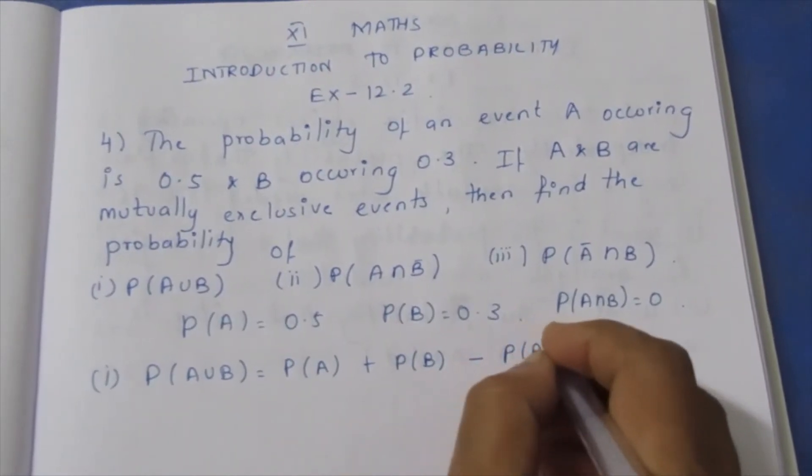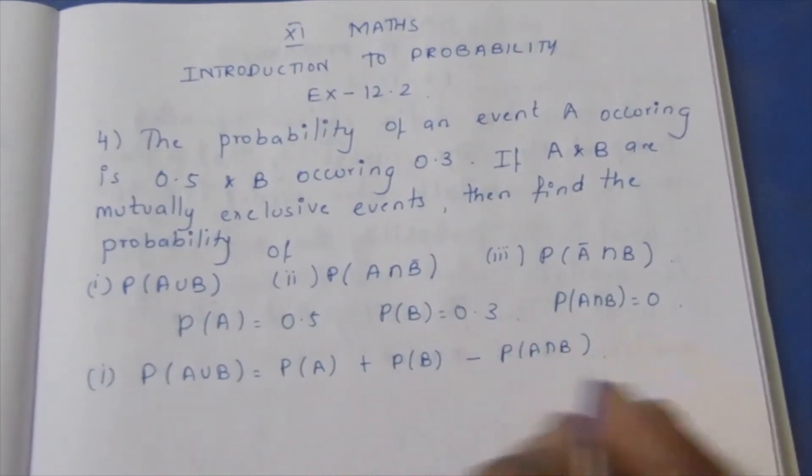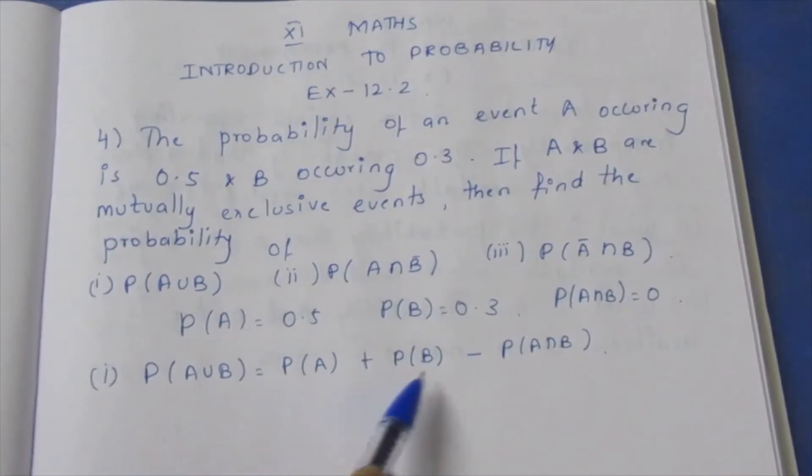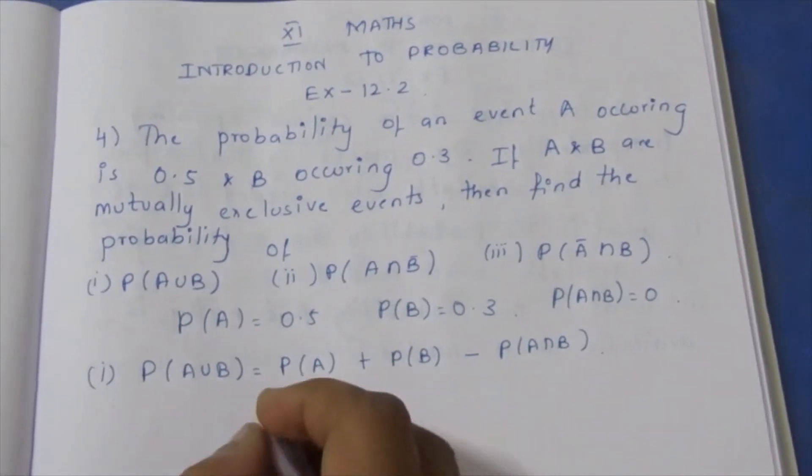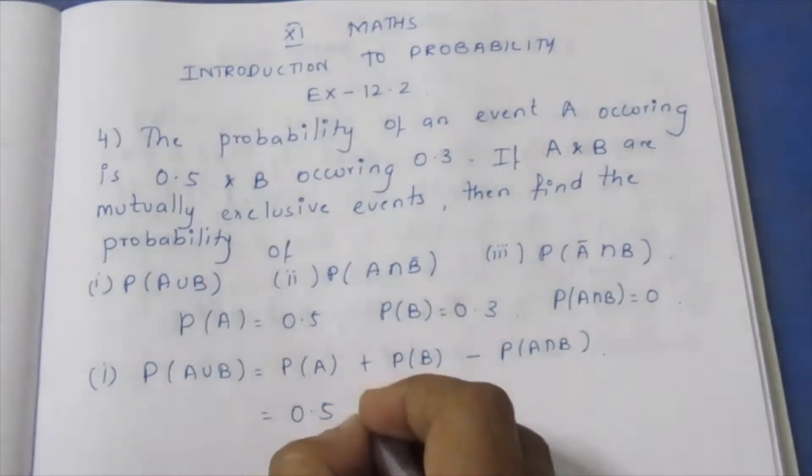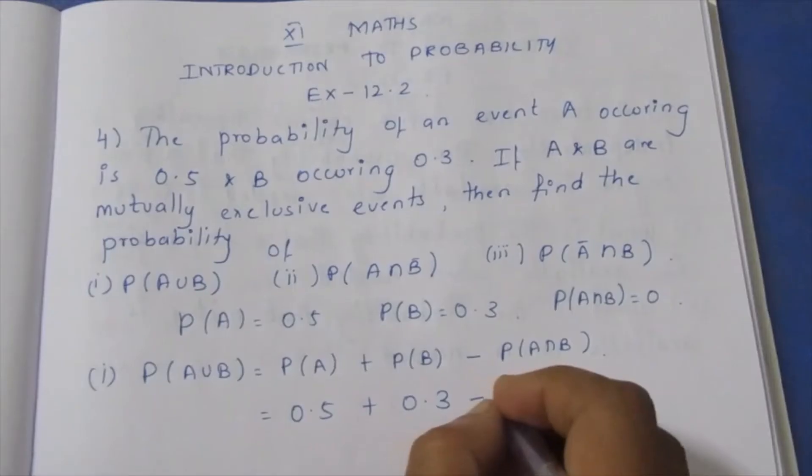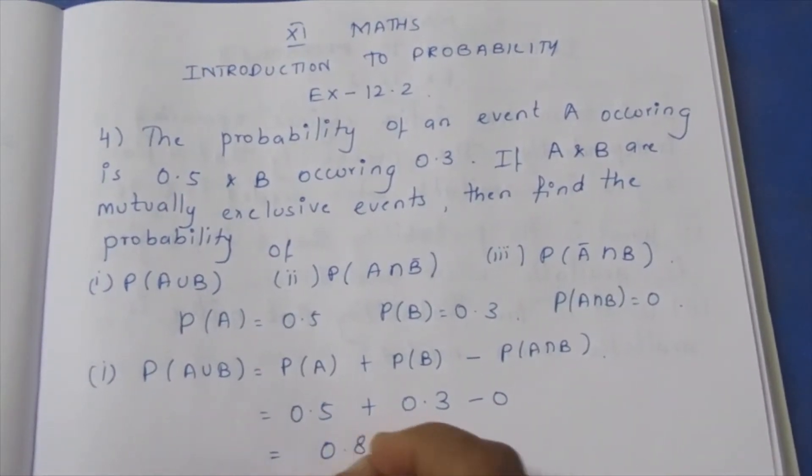P of A union B equals P of A plus P of B minus P of A intersection B. So we substitute: 0.5 plus 0.3 minus 0, which equals 0.8.